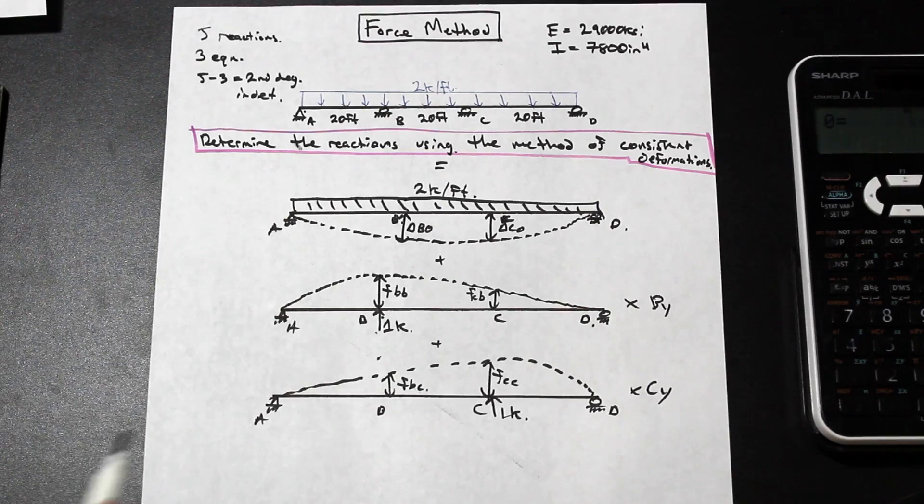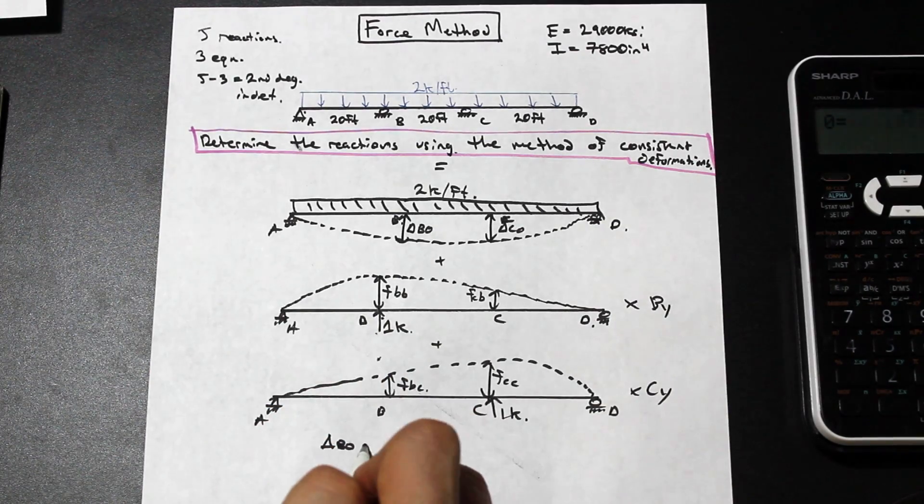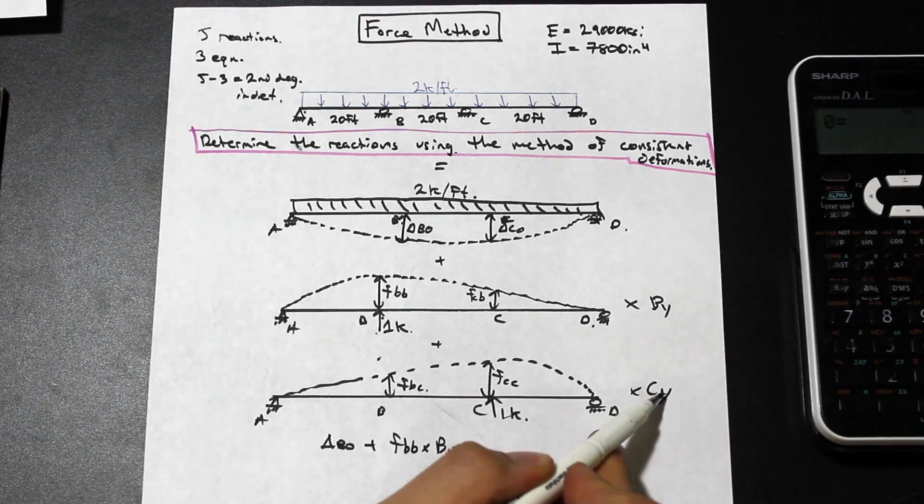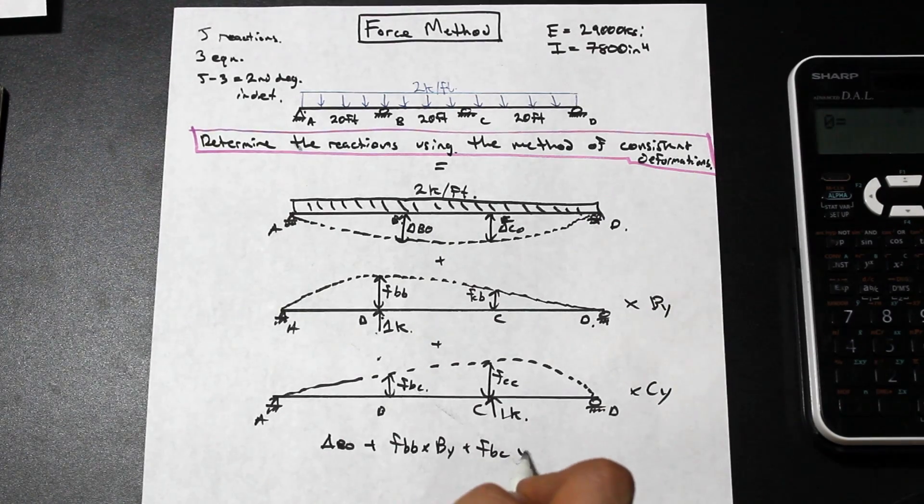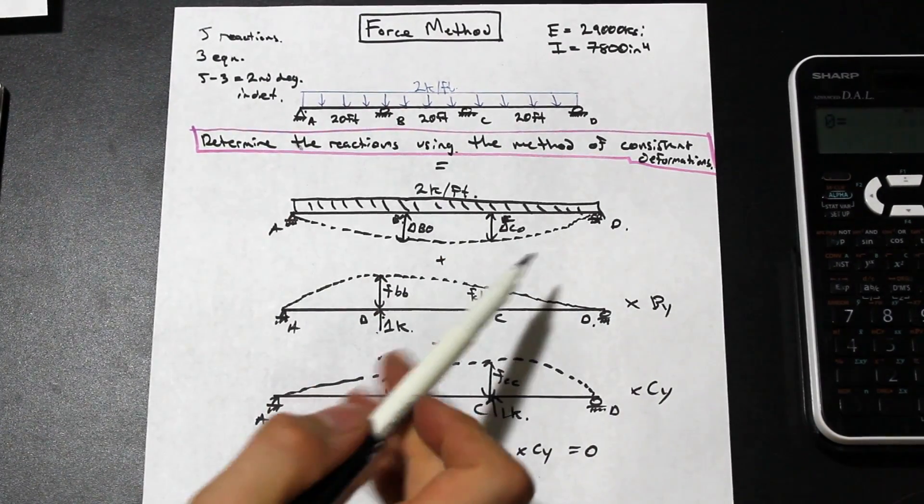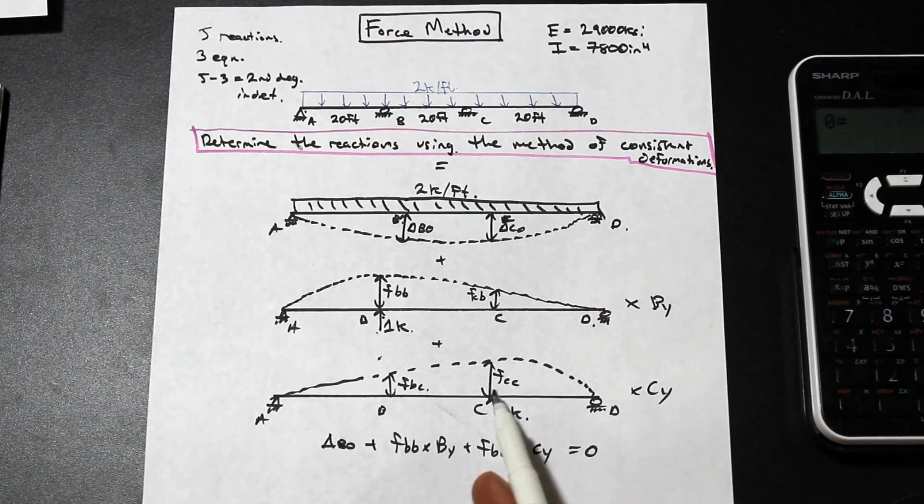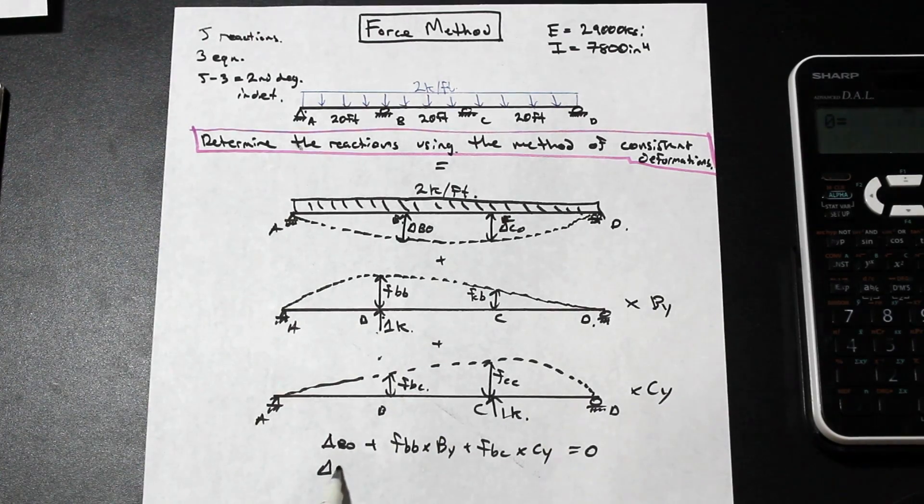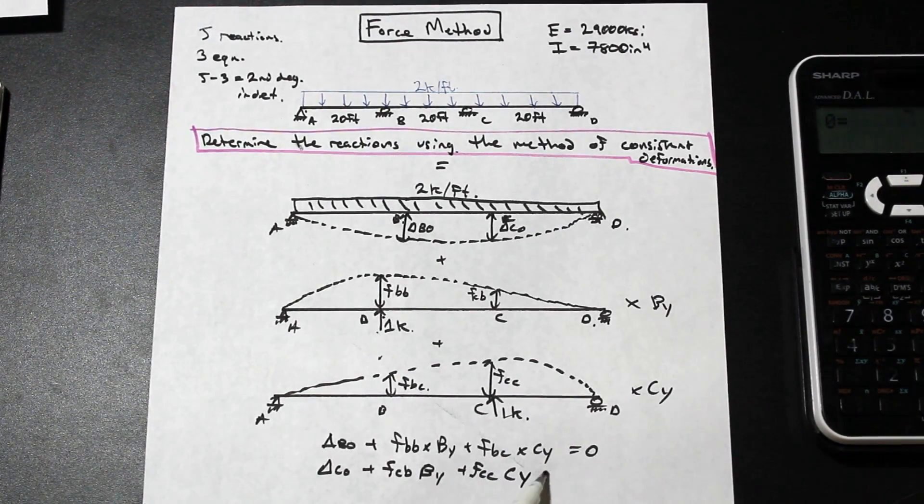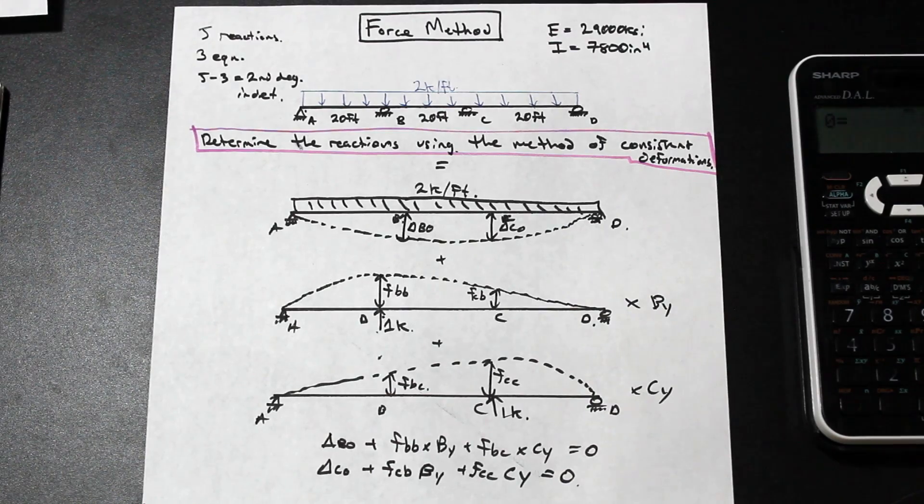So we can say that delta B0 plus FBB times BY plus FBC times CY equals zero. So that is one of the equilibrium equations. Let's do the next one. Now you can see how it helps to write it out in different stages like this, because we can just go: delta C0 plus FCB times BY plus FCC times CY equals zero. And that's exactly what I'm going to write here. If you want more in-depth explanation on this, I totally understand. I'm trying to keep this video short and show you the steps to solve the problem. If you want to know how this is derived, your textbook is a perfect resource for that.